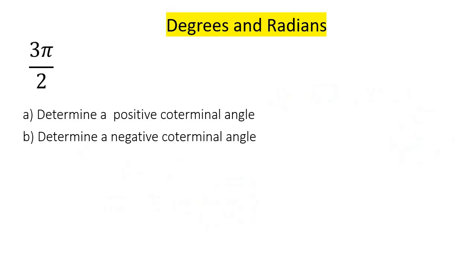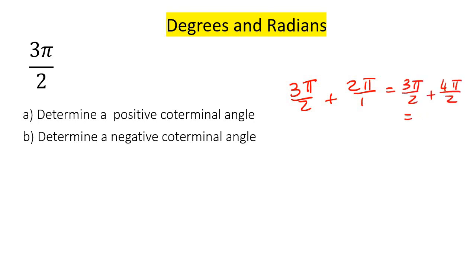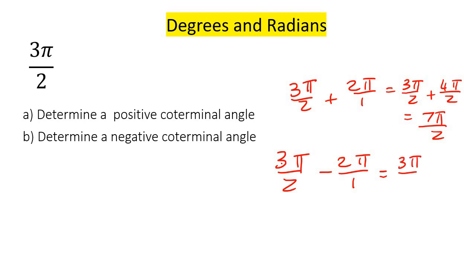To find a positive coterminal angle, I'm just going to add 2 pi. I need to get a common denominator, so that'll become 4 pi over 2, which is then 7 pi over 2. To find a negative coterminal, you could just subtract 2 pi — with a common denominator that gives us negative pi over 2.